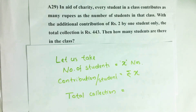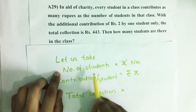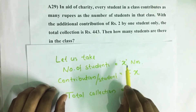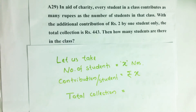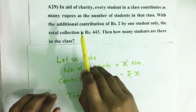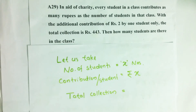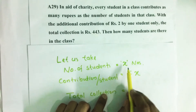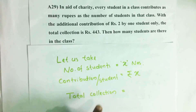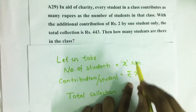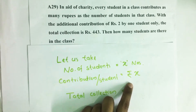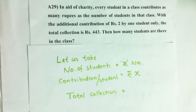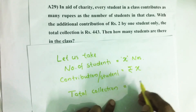Let us take the number of students in the class as X. It is given that each student's contribution is equal to as many rupees as the number of students in the class, which is X. So each student gives X rupees as their contribution.